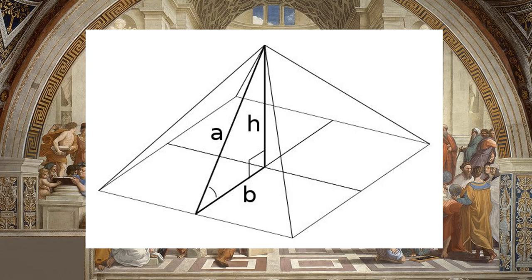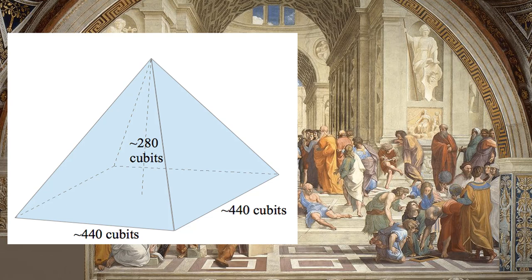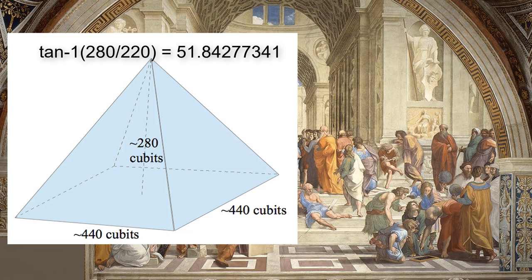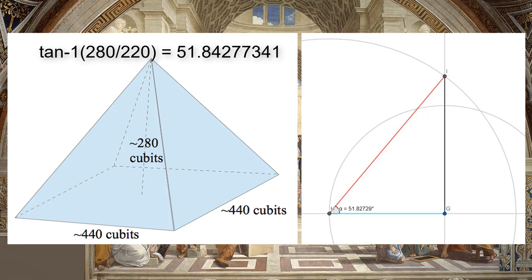The slope of a square-based regular pyramid is measured by a right triangle with a base of half the base length of the pyramid and a height equal to the height of the pyramid. The Great Pyramid of Giza has a base length of 440 royal Egyptian cubits and a height of 280 cubits, giving it a slope of 51.843 degrees. This means the ratio of the semi-base to the slope of the Pyramid of Giza is almost exactly the ratio of one to phi.